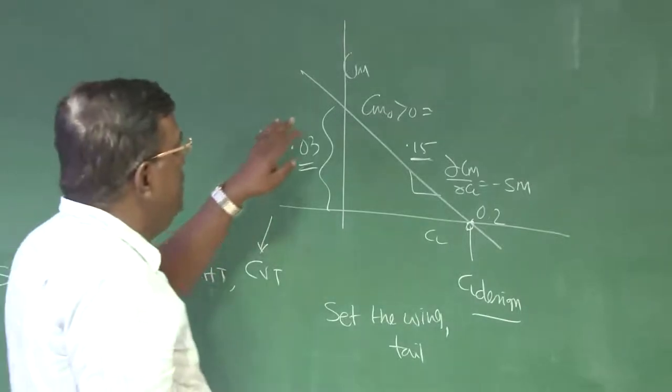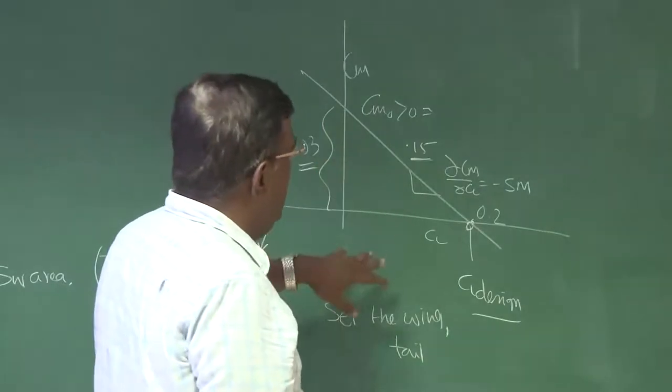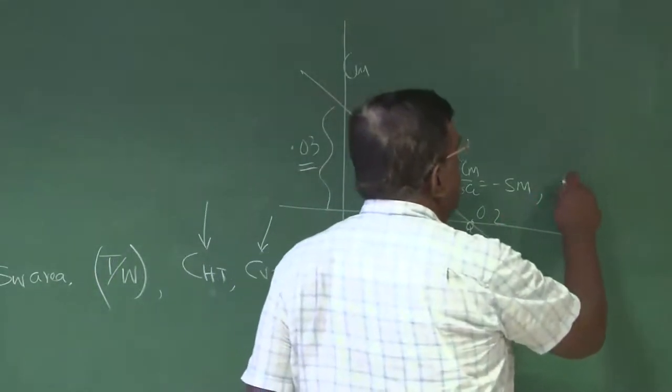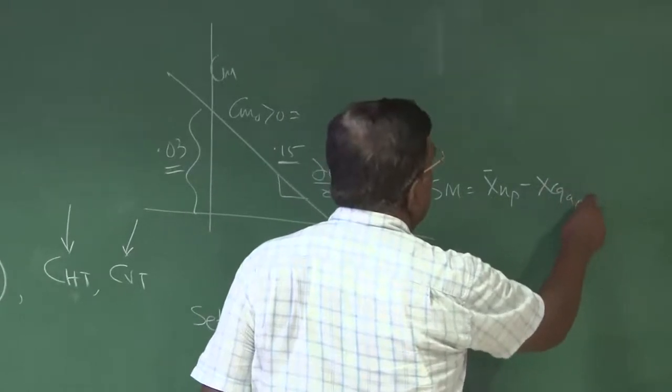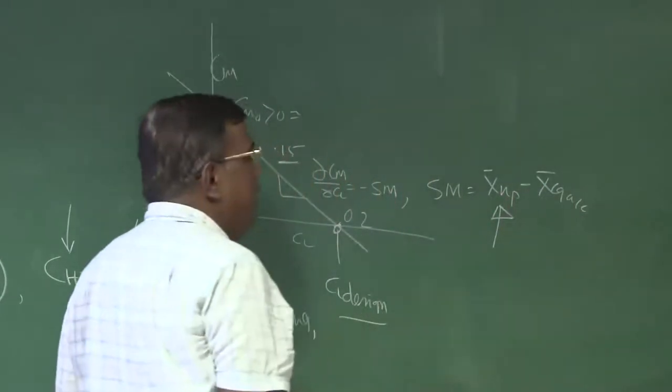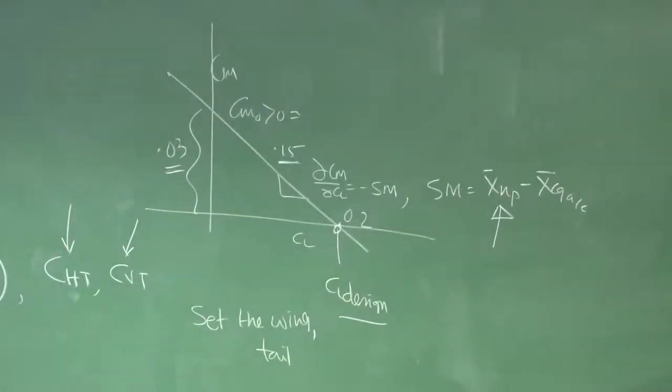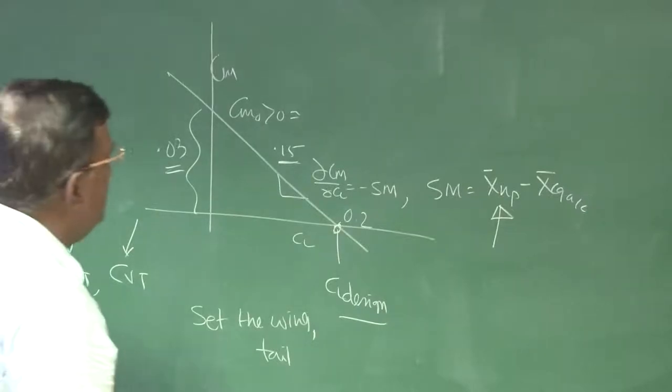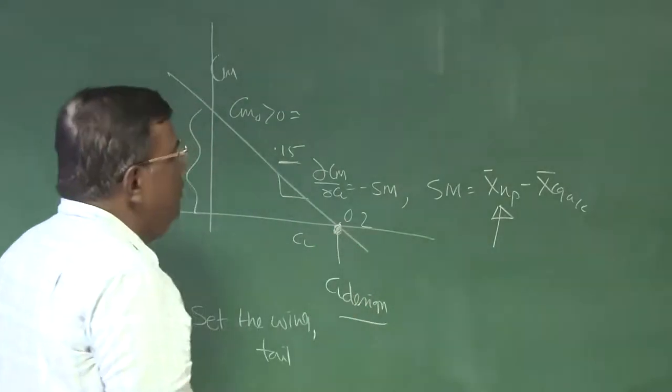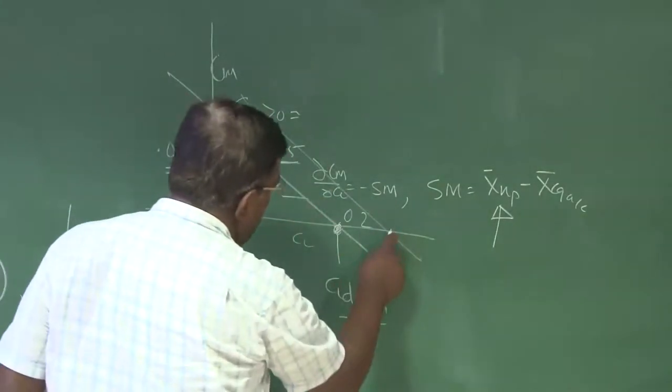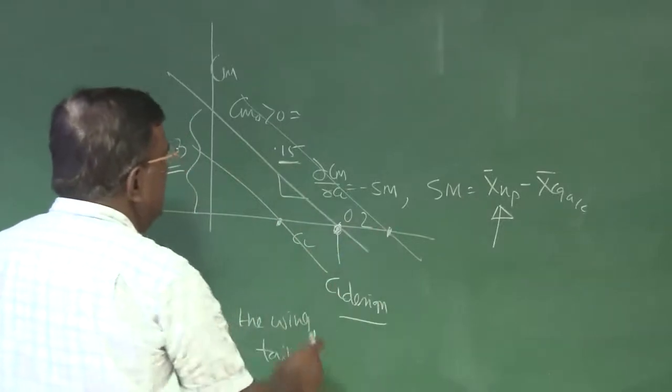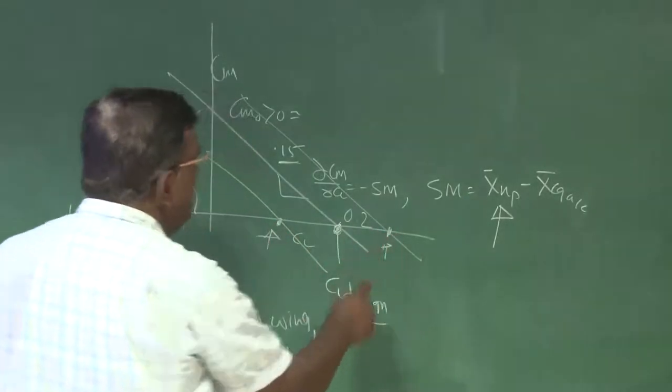So that CM0 is satisfied and dCM by dCL is satisfied. Remember, for static margin, this is neutral point minus XCG of the airplane and we have expression for how to find neutral point, which largely depends on tail volume ratio. All these things we have done. The next question is, suppose this is the CL at which we have designed, but it is not all the time we will be flying at this CL. So I need to fly sometime at this CL, sometime perhaps at this CL, at a higher speed, at a lower speed. How do I do that?